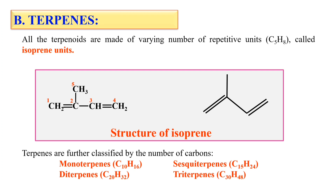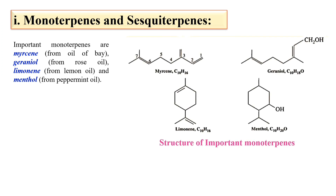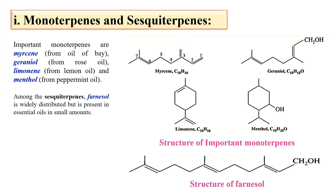Terpenes are further classified as monoterpenes, diterpenes, sesquiterpenes, and triterpenes. Monoterpenes and sesquiterpenes generally involve in fragrance — the fragrance of many plants is due to these terpenes. The important monoterpenes include myrcene, geraniol, limonene, and menthol. These are the structures of these monoterpenes, while the sesquiterpenes include farnesol.